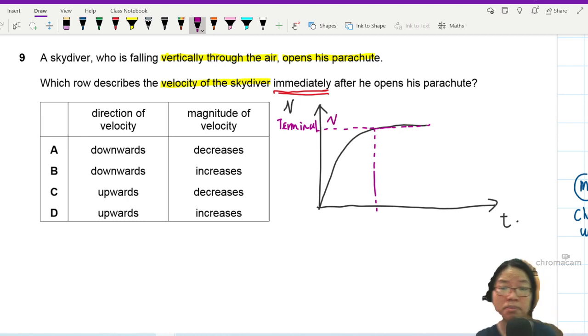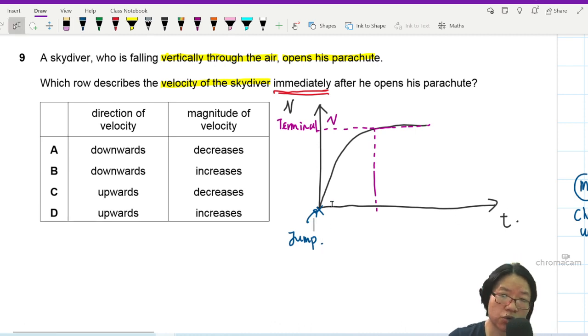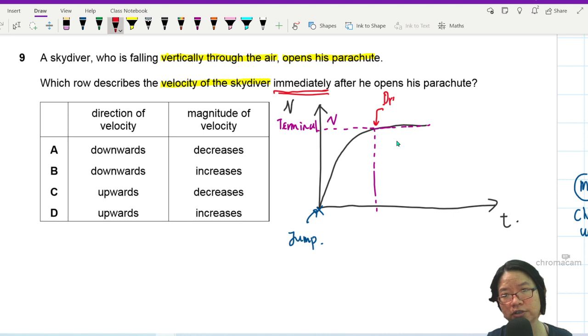If it's immediately after he jumps, this is where he leaves the airplane. The speed will increase until a constant value. The reason why you reach terminal velocity here is because your drag force balances off your weight.